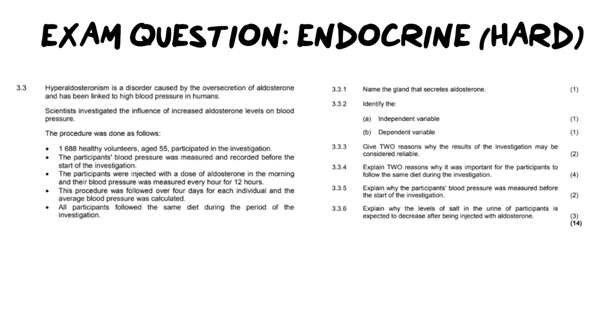So let's get into the question. Now as always we need to prepare our question and read through it and take out all the important information in the introductory paragraph. So it says hyperaldosteronism is a disorder caused by the over secretion of aldosterone and it's being linked to high blood pressure. Now scientists investigate the influence of increased aldosterone levels on blood pressure and the procedure was done as follows. They took 1,688 healthy volunteers aged 55 who participated in this investigation. The participants' blood pressure was measured and recorded before the start of the investigation. The participants were injected with a dose of aldosterone in the morning and their blood pressure was then measured every hour for 12 hours. This procedure was followed over four days for each individual and the average blood pressure was calculated. All participants followed the same diet during the period of investigation.